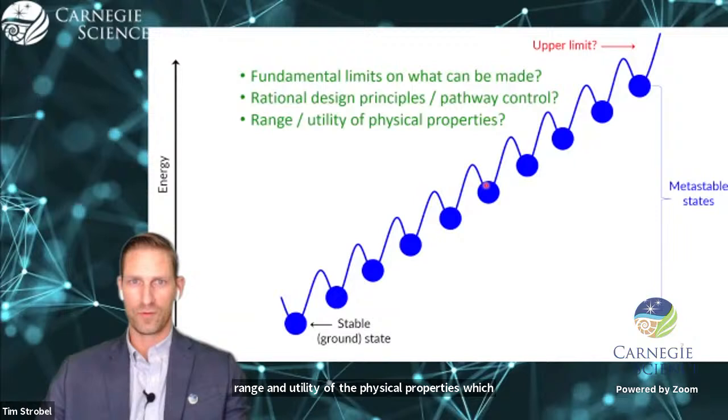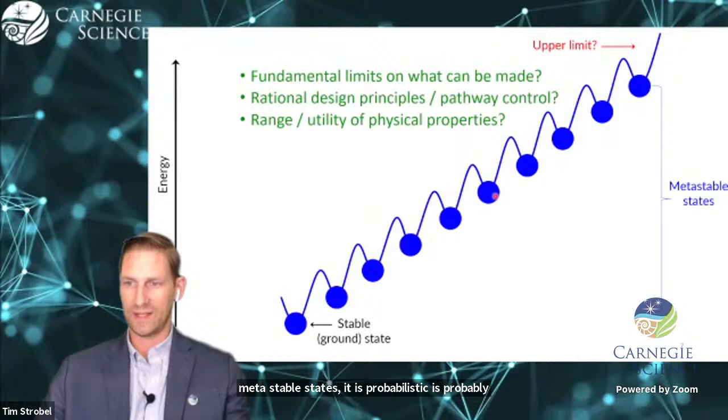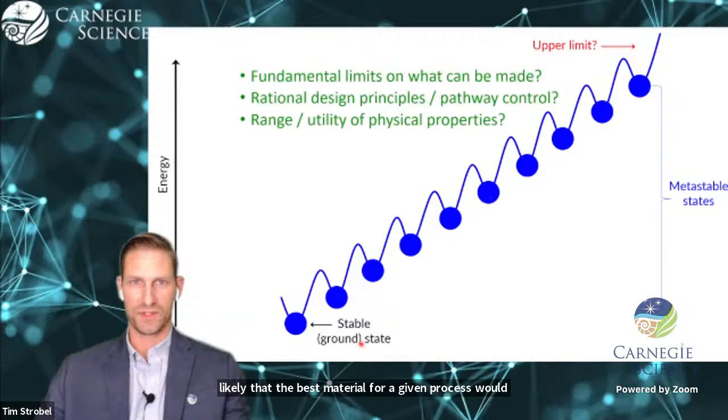Diamond is a metastable phase, but has some of the most interesting properties of all materials being the hardest known, highest thermal conductivity. Given the vast number of hypothetical but plausible metastable states, it is probably likely that the best material for a given process would be a metastable material compared with the singular thermodynamic ground state.